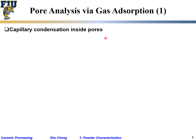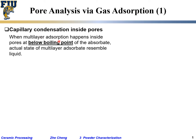Other than surface area analysis, with gas absorption analysis people can also get a lot of information about porosity and pores. The underlying principle is essentially capillary condensation. We talked about BET, about monolayer to multi-layer coverage — and as multi-layer adsorption happens inside pores, we do this at liquid nitrogen, at the boiling point of the adsorbate.